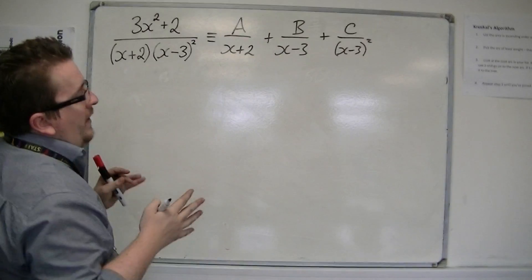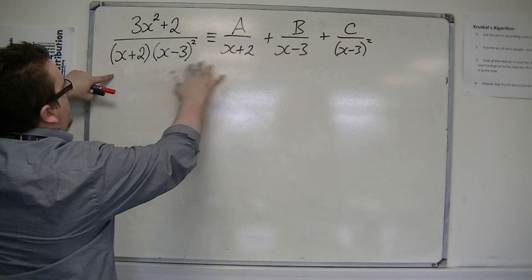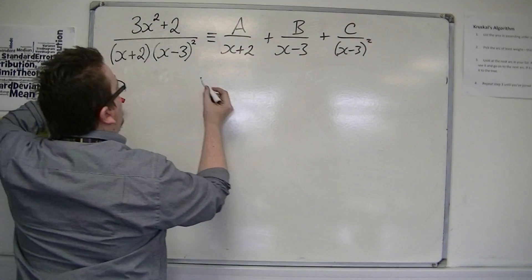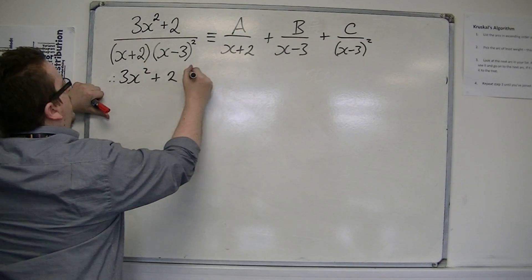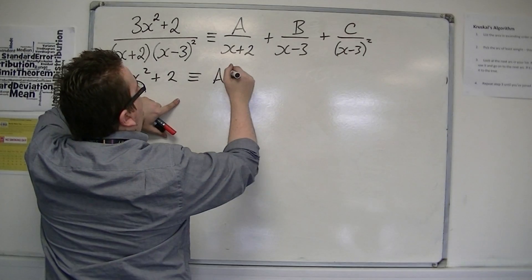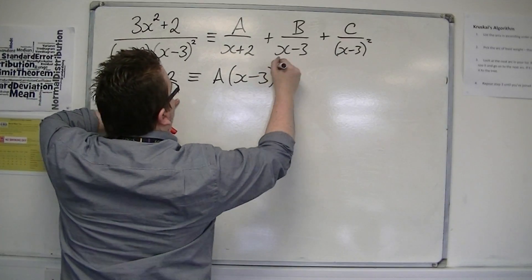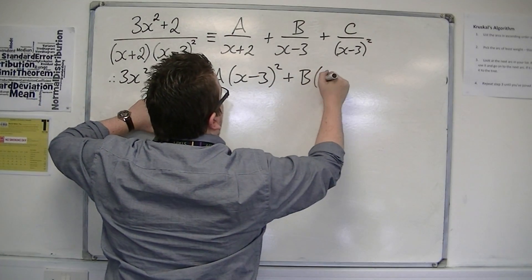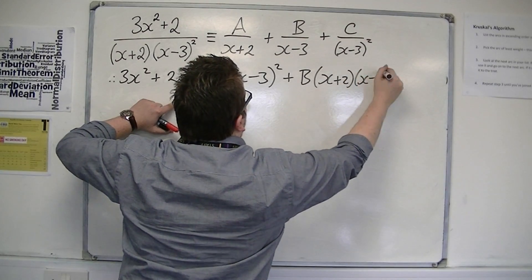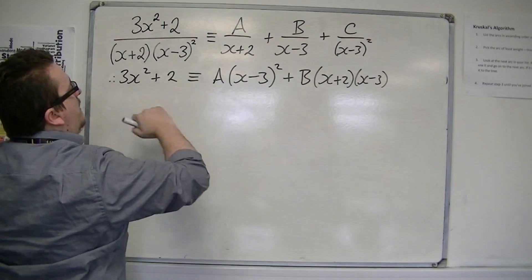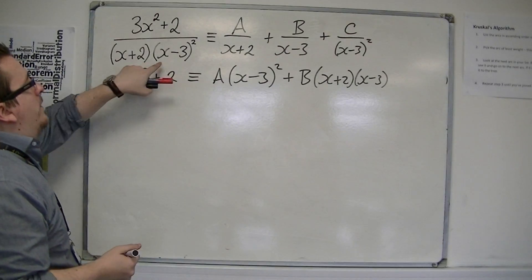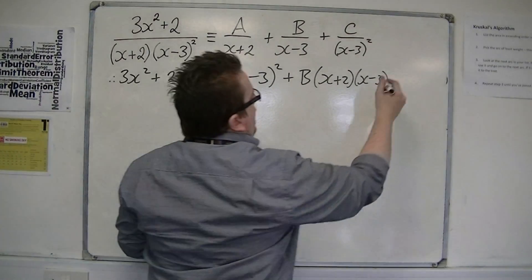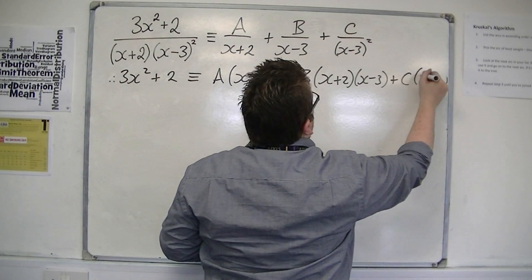So, once we're at that stage, we can multiply through by x plus 2, x minus 3 squared. We're going to get 3x squared plus 2 is equivalent to A times x minus 3 squared, plus B times x plus 2, x minus 3, because when I multiply through, one of the x minus 3's cancels, but I'm still left with one of them and the x plus 2. And I've got C times x plus 2.